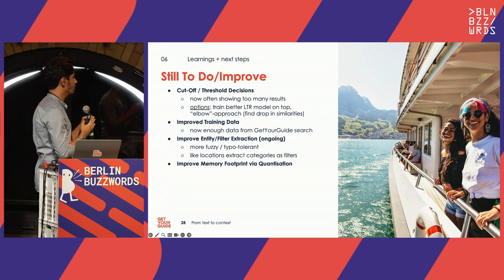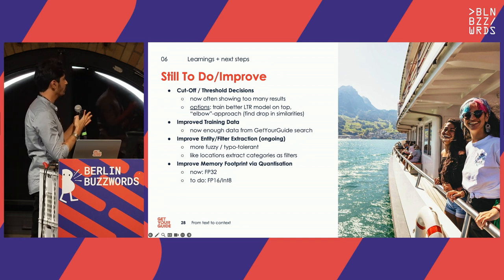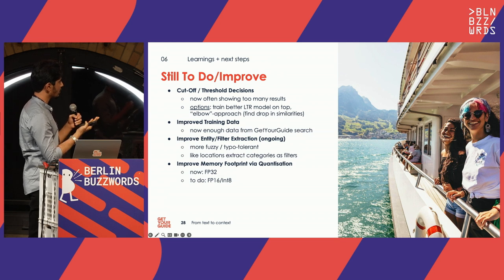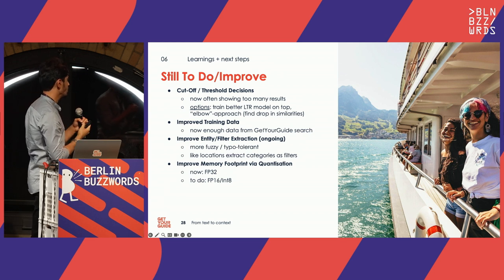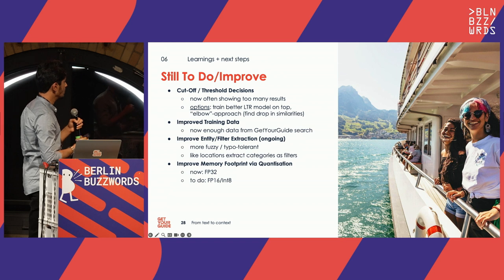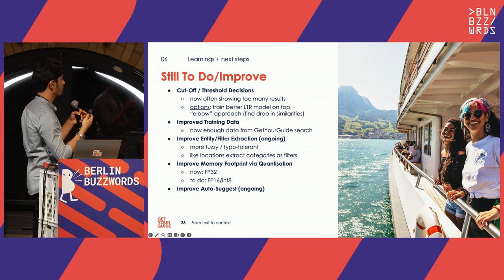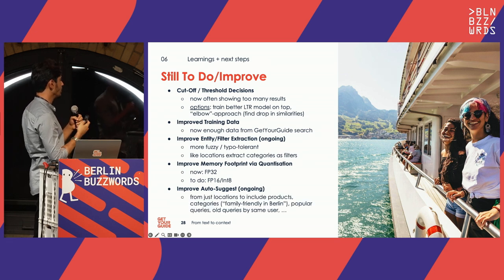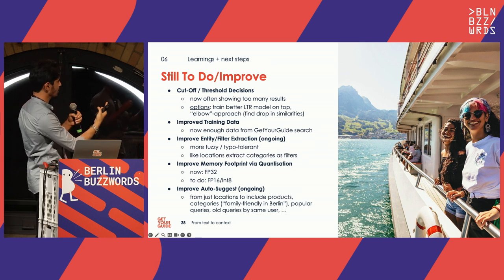On the technical side, we want to improve memory footprint via quantization. The current version of OpenSearch we use doesn't support integer vectors, but we expect to get FP16 or INT8 vector support in the next version we upgrade to. Auto-suggest is another area with a big focus — allowing customers to search with more complex queries and delivering the best results, which is also ongoing right now.